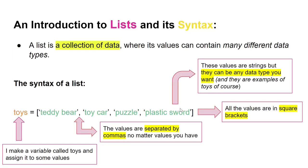So far we've already learned about four data types: floats, integers, strings, and boolean. A list is a collection of data where its values can contain many different data types. To make a list you first need to make a variable — in this case 'toys' — and then assign it to some values. On the right of the assignment operator you have square brackets, and inside go the values. Since the values are strings, they are within quotes and each value is separated with a comma. These values can be any data type you want — for example integers, floats, or even boolean.